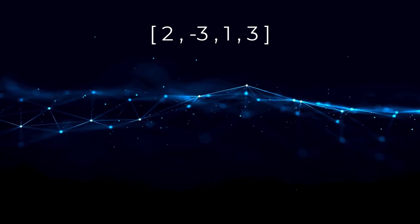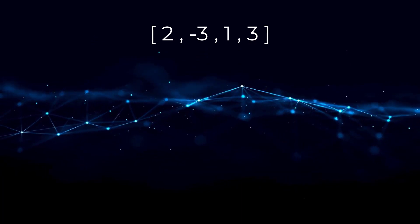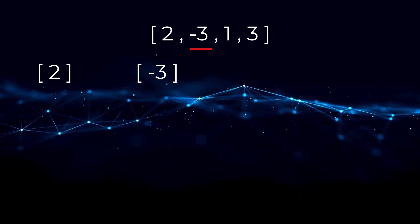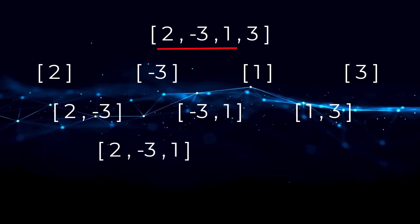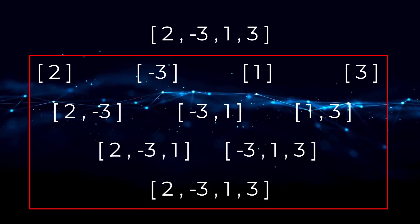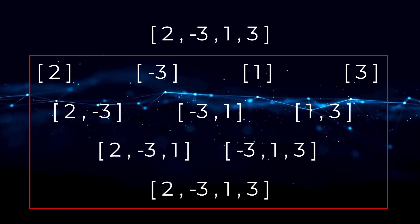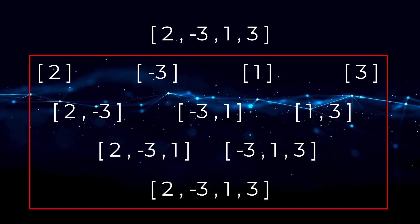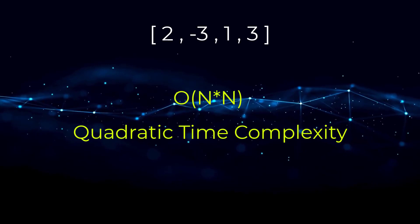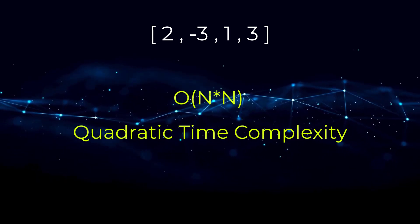An obvious but inefficient approach would be to calculate every single contiguous subarray. In this array alone, we would have all of these subarrays. Then for each, we would need to calculate the sum and return the max. When all is said and done, this results in a quadratic time complexity, but we can definitely do better.